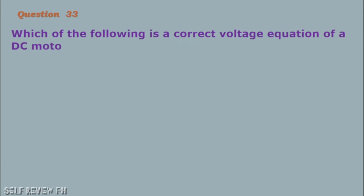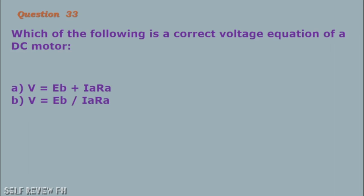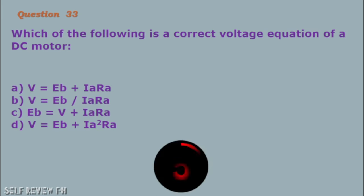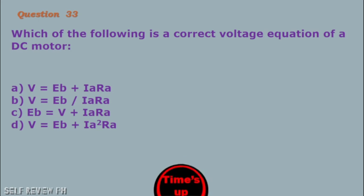Question number 33: Which of the following is a correct voltage equation of a DC motor? A. V = Eb + Ia×Ra B. V = Eb ÷ Ia×Ra C. Eb = V - Ia×Ra D. V = Eb + Ia²×Ra. The correct answer is letter A, V equals Eb plus Ia×Ra.